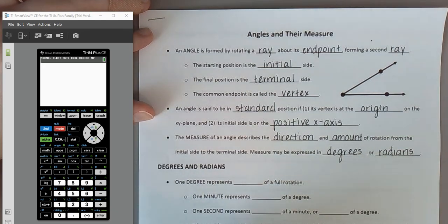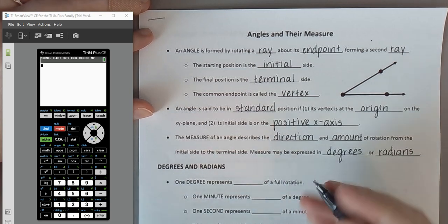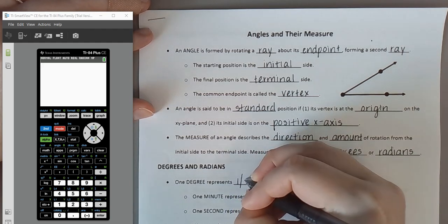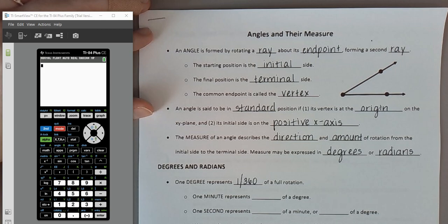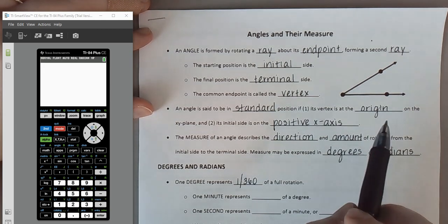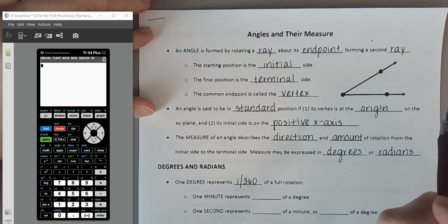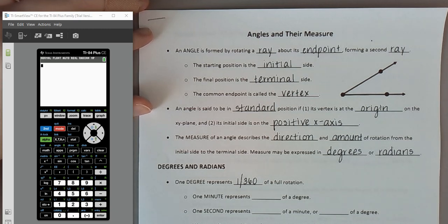Degrees versus radians — let's define each. One degree represents 1/360th of a full rotation. If you take a circle and divide it into 360 equal pieces in terms of rotation, one degree represents one of those 360 pieces.